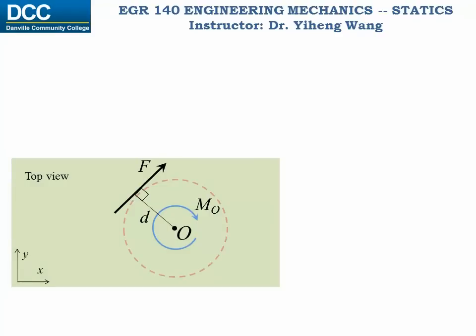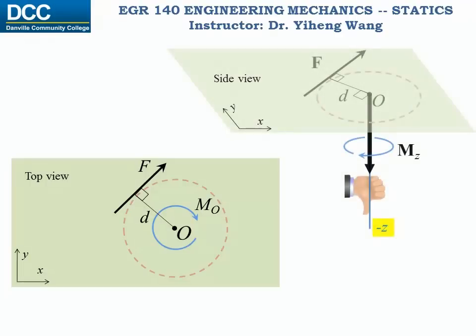If we reverse the direction of the force in this image, then intuitively we can tell the force is now creating a clockwise rotational effect about point O. However, the moment that the force creates now points towards the negative z direction, still following the right-hand rule. And although from the top view you see a clockwise rotational effect, it is still counterclockwise about the moment vector Mz. So in a 2D plane, you should imagine the moment vector as an arrow shooting into the plane, and you can only see the tail of the arrow. Because of the negative z direction of the moment vector, it is called a negative moment.